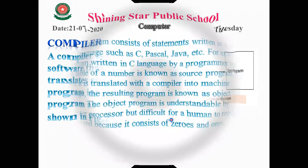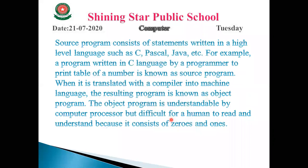For example, if we write a program in C language to print a grade according to a given number, that program is known as the source program. When we compile it, the compiler converts it into the object program. The object program is directly understandable by the computer processor.